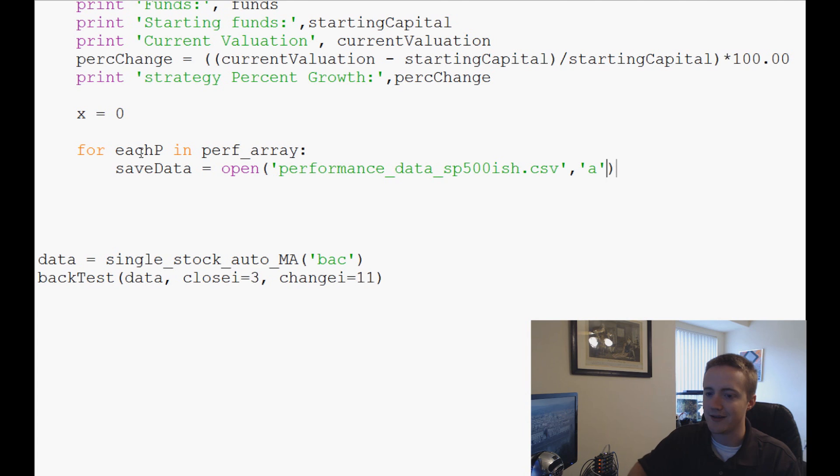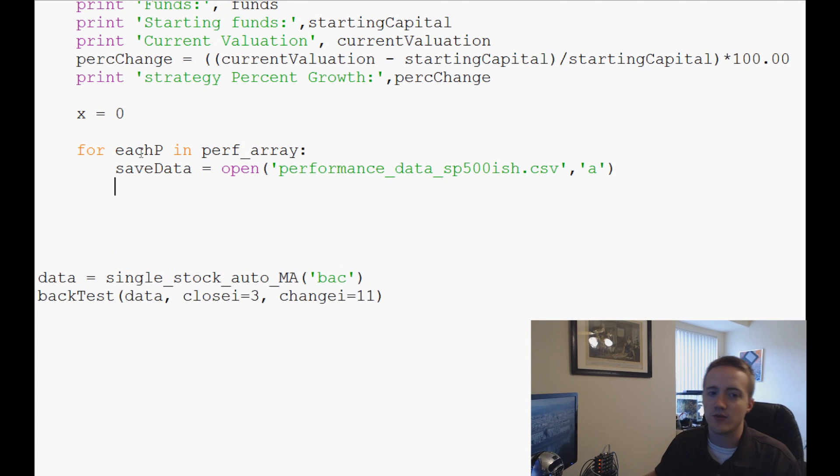And then what we're going to say is we have to save, create a line that we want to save. So this line is going to be kind of a funny line, but you'll just have to work with me on this. So what we're going to do is, we'll do line equals string date_array X.